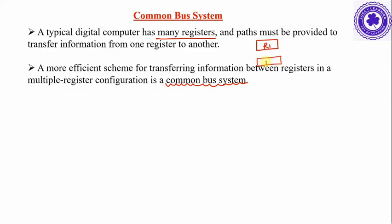Why is a common bus system required? Suppose we have two registers, register 1 and register 2, and a transfer is to take place from register 1 to register 2. Assuming each register has 4 bits, there should be 4 output lines of R1 connected to 4 input lines of R2. If transfer is between R1 and R3, then 4 output lines of R1 connect to 4 input lines of R3. So if the number of registers increases, the number of wires increases greatly. To avoid this problem we use a common bus system.